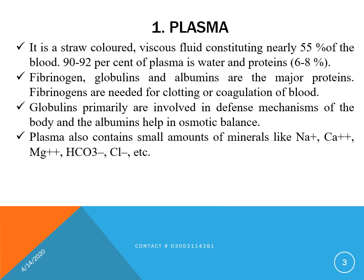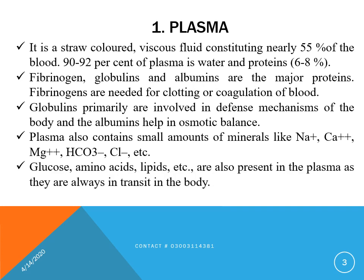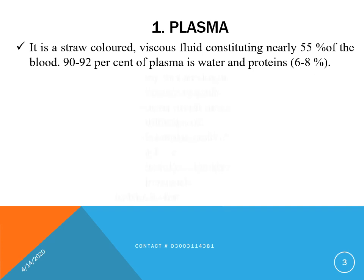The inorganic materials in plasma include sodium, calcium, magnesium, bicarbonate ions, chlorine, and many other minerals, especially those we get from water and food. The organic substances include glucose, amino acids, and lipids. Glucose is the fuel of our body and is also present in plasma. These substances are always in transit in blood.